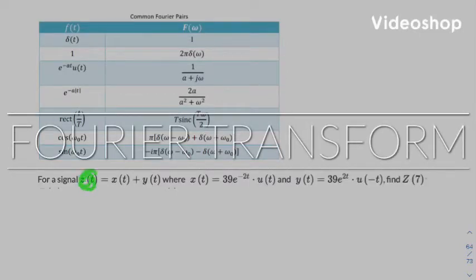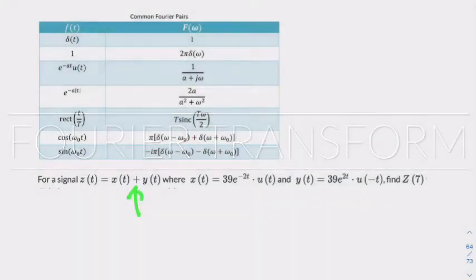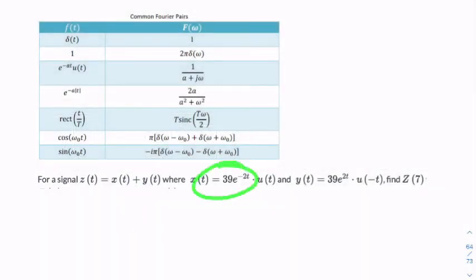Here we're told about a signal Z that's made up of the sum of two other signals, X and Y. These signals look very similar. In fact, they're symmetric. And the question is about finding Z in the frequency domain. So immediately when we see that, we know a Fourier transform is involved.